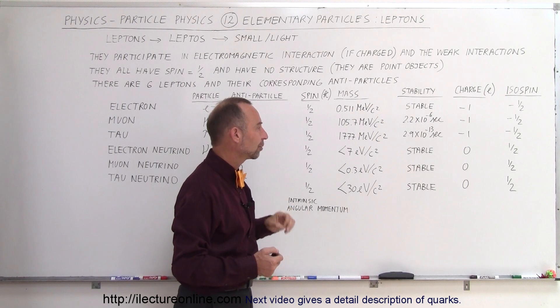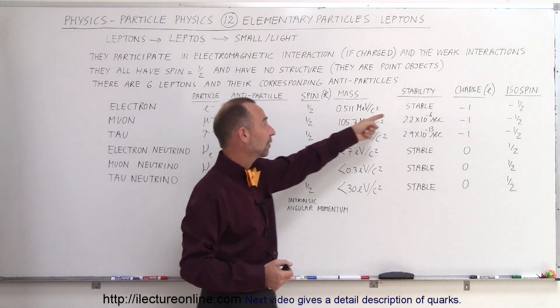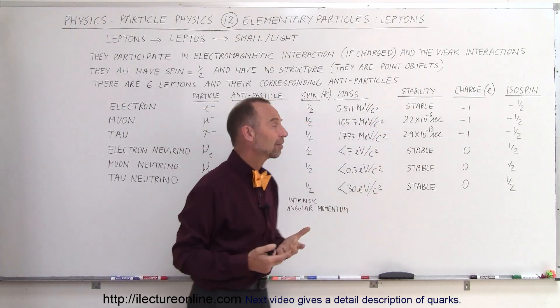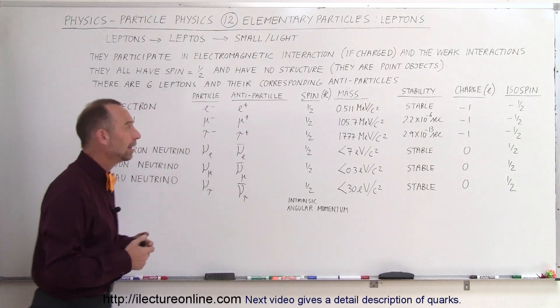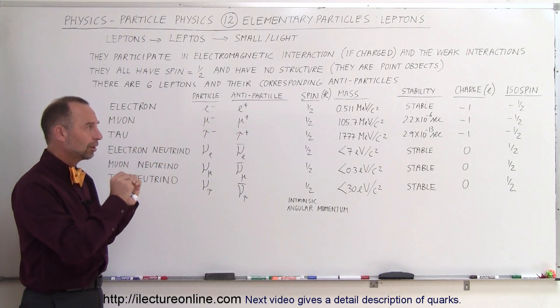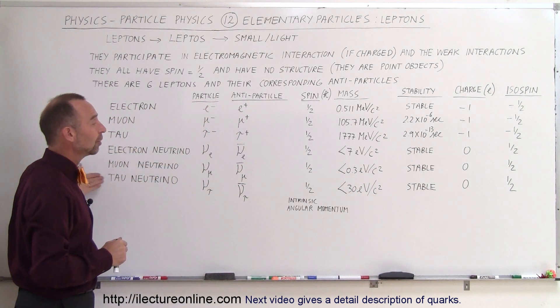They require a lot of energy to create. Now the electron is a very stable particle. It lasts just about forever and therefore it is small and very stable. So are the neutrinos.